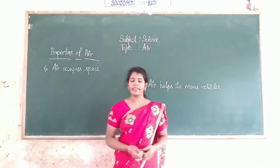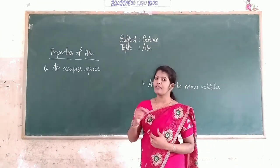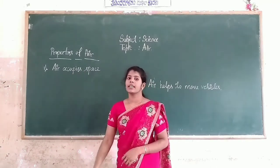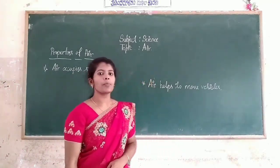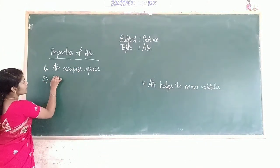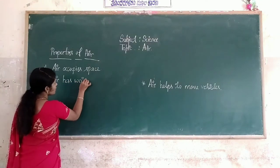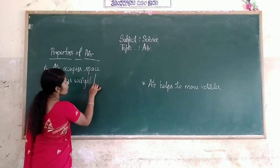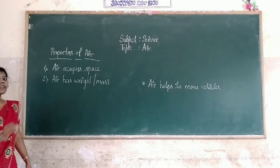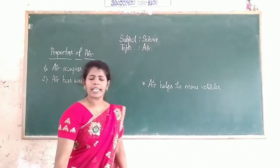From these activities, we learned that the first property of air is air occupies space. Then we move on to the second property. The second property is air has weight. Air has weight. In your class textbook, it mentions that air has weight. Is it correct? How can we say air has mass?